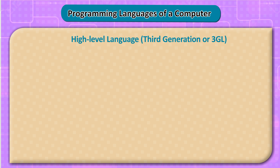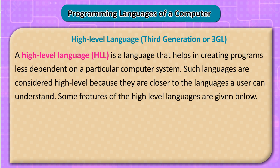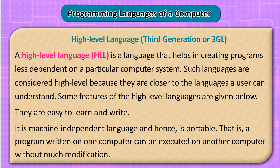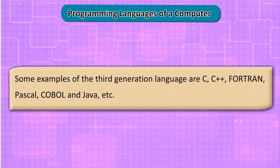High-Level Language — 3rd Generation (3GL): A high-level language (HLL) helps in creating programs less dependent on a particular computer system. Such languages are closer to languages a user can understand. They are easy to learn and write, and are machine-independent, hence portable — a program written on one computer can be executed on another without much modification. Examples include C, C++, Fortran, Pascal, COBOL, and Java.